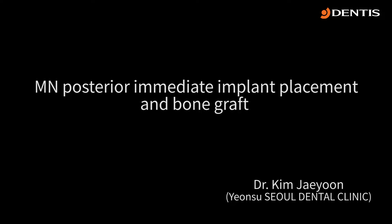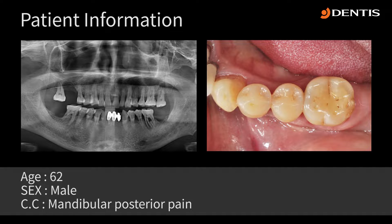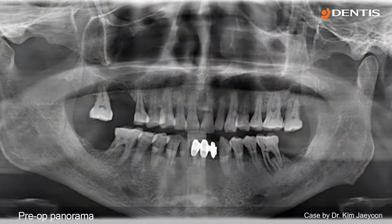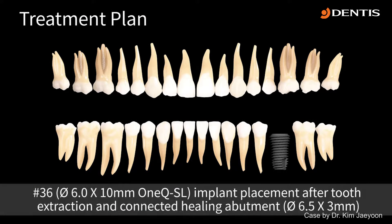My name is Jae-yoon Kim and today's case is mandibular posterior immediate implant placement and bone graft. The patient has a vertical root fracture on tooth number 36 and is feeling pain, so I plan to extract tooth 36 and place a wide-size fixture on it.